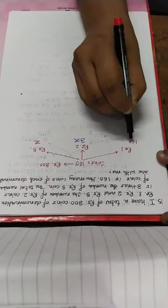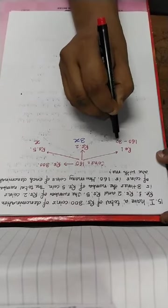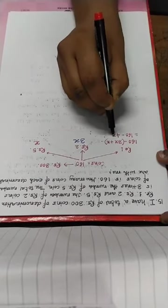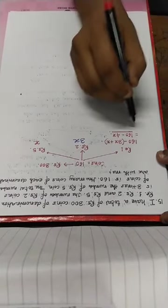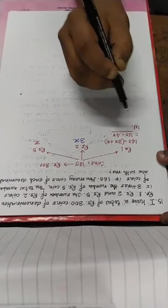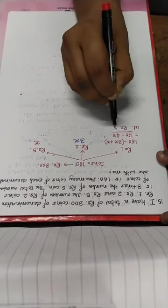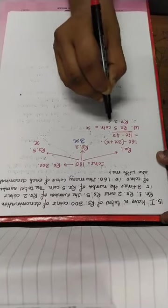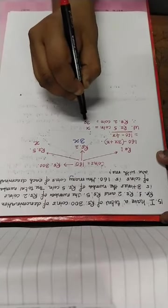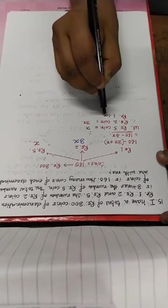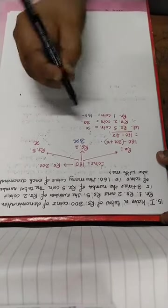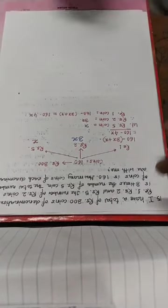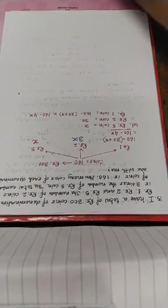Rs. 1 total coins is 160. Let Rs. 5 coin equal to X. Therefore Rs. 2 coin is equal to 3X. Rs. 1 coin is equal to 160 minus 3X plus X, which is equal to 160 minus 4X. This is what we call this coin.